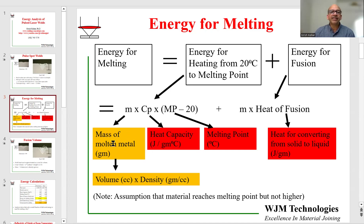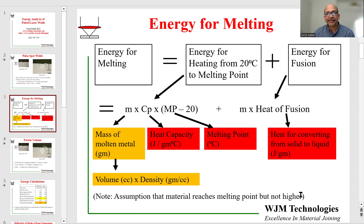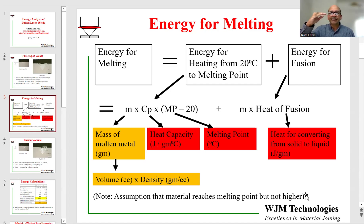What we need is the mass of molten metal. For that, we start with the volume of molten metal and multiply by the density. In this analysis, we are assuming that the material reaches the melting point but not much higher — the material heats up from room temperature to melting point, melts, and that's pretty much it.